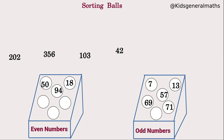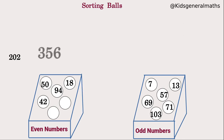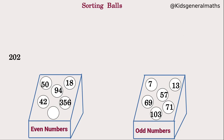Next, 42: it is an even number — place it in the even number box. Next, 103: it is an odd number — place it in the odd number box. Next, 356: it is an even number — place it in the even number box. Next, 102: it is an even number — place it in the even number box.